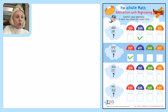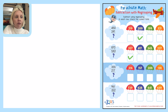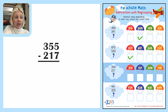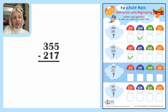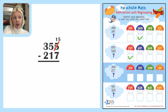Great job! Let's go on to the next one. The next one is 355 minus 217. I need to take seven away from five — well I can't do that because five is less than seven, so I need to add ten to this. It's actually going to be fifteen, because ten plus five is fifteen.